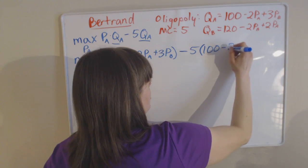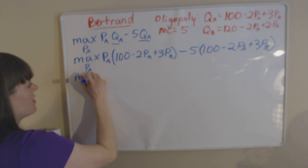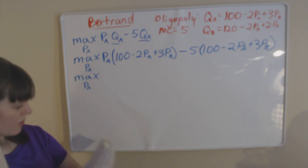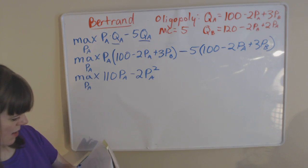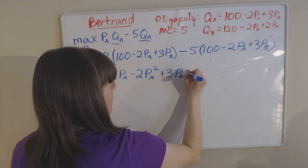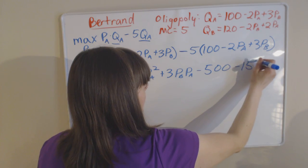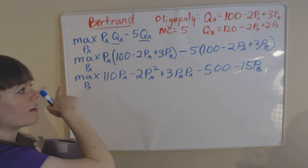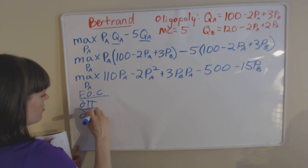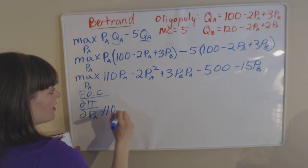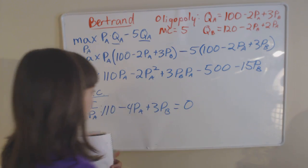We plug in the same demand function once again. That's a pretty long function, so let's simplify that. This big expression simplifies down to: 110·PA minus 2·PA² plus 3·PB·PA minus 500 minus 15·PB. So we have our finalized profit maximization problem for firm A and now we're ready to take our first order condition, taking the partial derivative of that function with respect to the price of firm A, our choice variable. We get 110 minus 4·PA plus 3·PB equals 0.